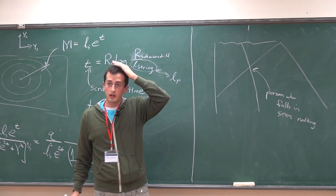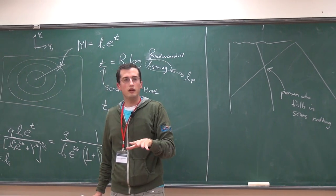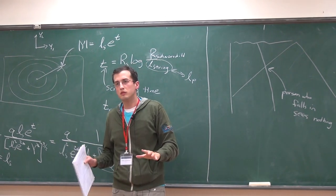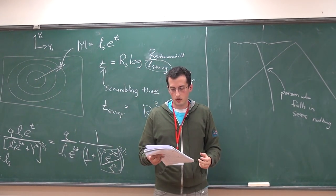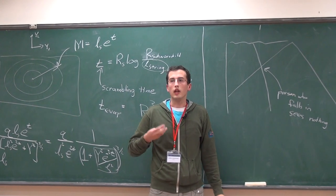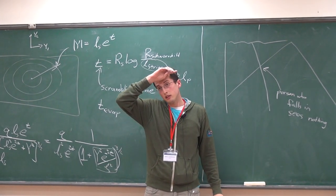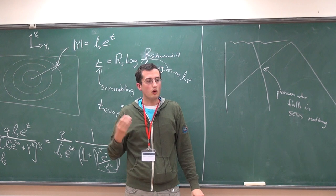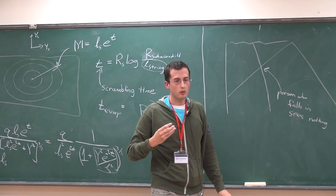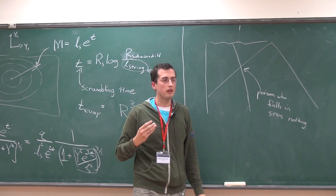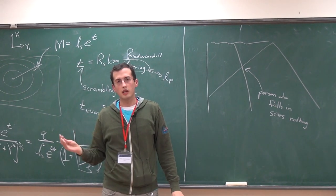Complementarity is not, by itself, a theory of quantum gravity or anything. It's more a feature that we would like the quantum gravity theory to have. It's a bit like, pre-quantum mechanics, if someone told you the Heisenberg uncertainty principle but you didn't know quantum mechanics — if they said it's impossible to know the momentum and position of an object at the same time, you'd say that's obviously false.